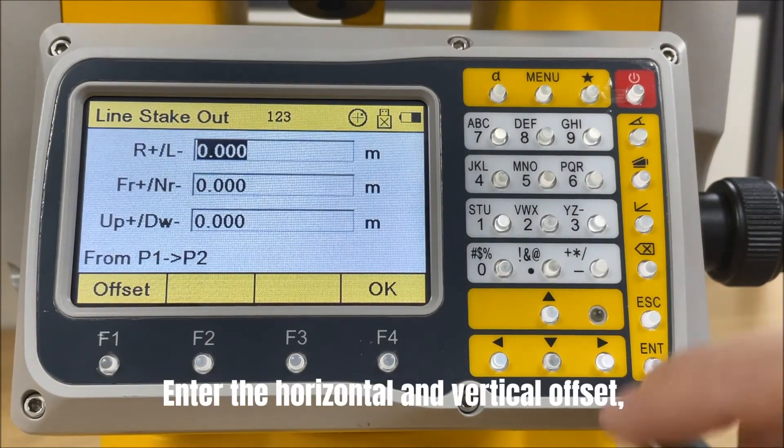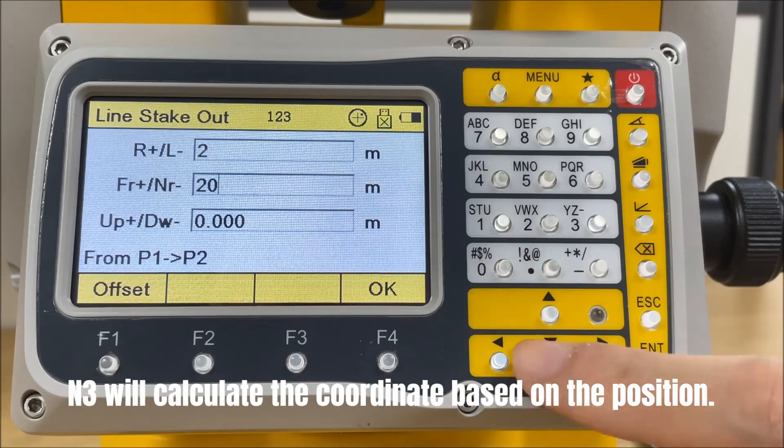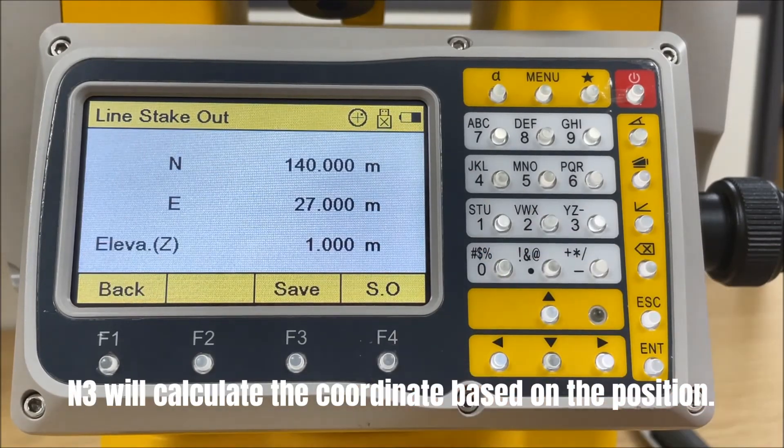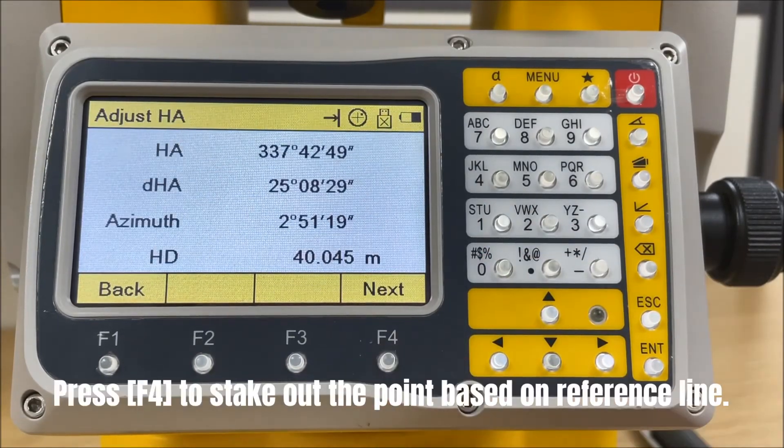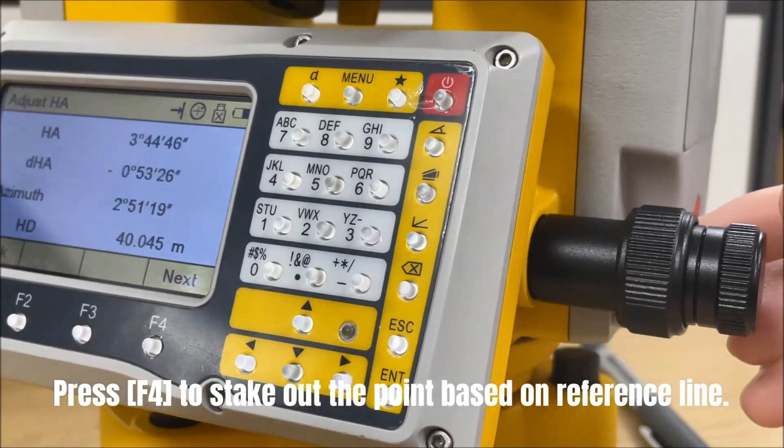Enter the horizontal and vertical offset. N3 will calculate the coordinate based on the position. Press F4 to stake out the point based on the reference line.